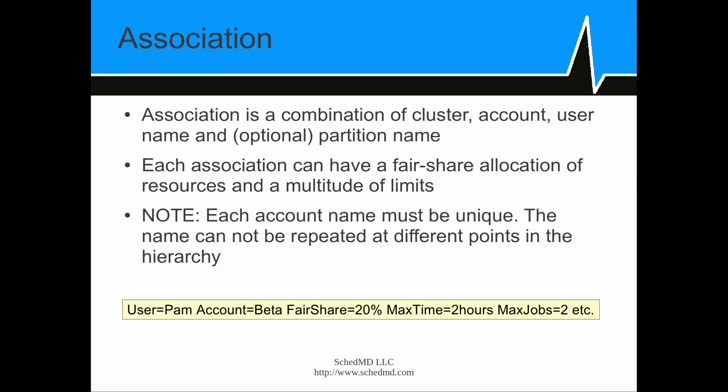SLURM uses a concept of association to manage its data. It's a four-tuple of your computer cluster name, your account, user name, and an optional partition name. Each association can have different limits associated with it and different shares of the resources. Each account name must be unique, so if you have a hierarchical tree of accounts, you can't repeat a name in different places in that hierarchy — it just makes for management problems. At the bottom, it shows you an example of the type of information that might be associated with it.